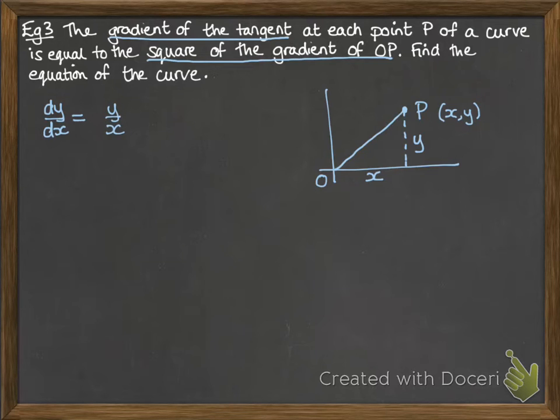So the gradient of OP is the change in y over the change in x. So that's y over x in this instance, since we're going from the origin. And we need to square it, because that's what it says in the question. So dy by dx is equal to y squared over x squared.